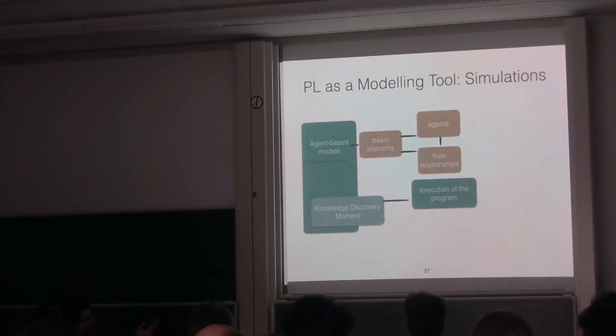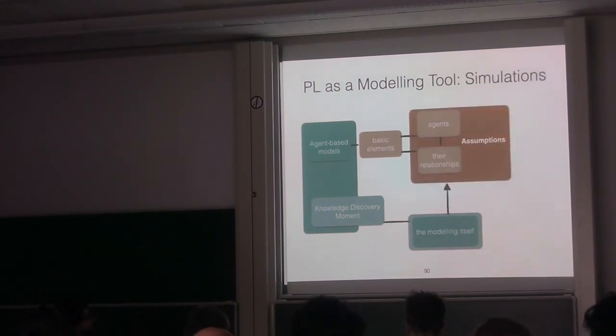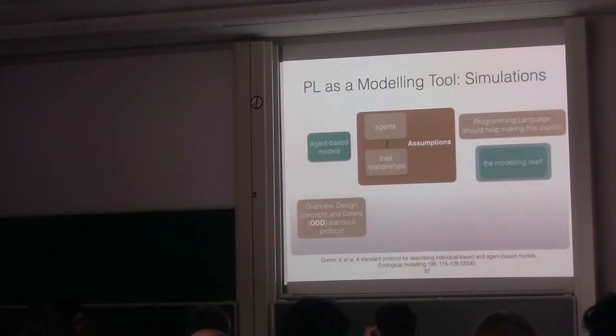The knowledge discovery moment, the first one that appears is with the execution of the program. For instance, we can see the emergent behavior or the consequences of perturbation. But there exists another knowledge discovery moment that is interesting, and this appears with the modeling, at the time of the modeling. Because when you model, you have to create or use assumptions between the agents and the relations. I think it will be interesting if the programming languages help us to make this assumption explicit.